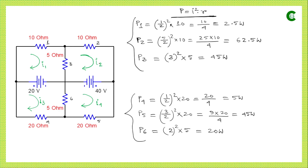For P2, the current through the second resistor was i2 = −2.5 A. When squared, the negative sign disappears, so the power P2 = (2.5)² × 10 = 62.5 W. The negative sign only reflects direction, not power magnitude.